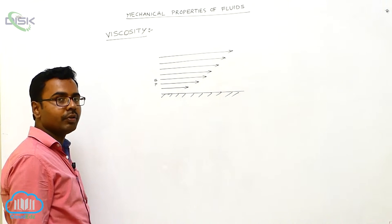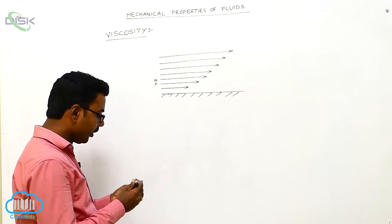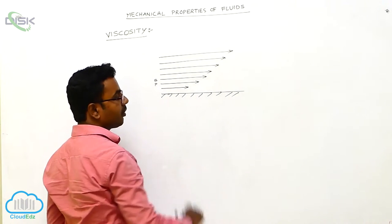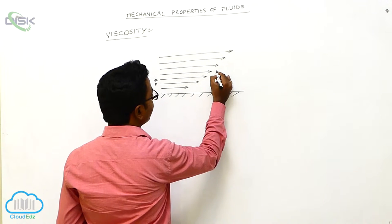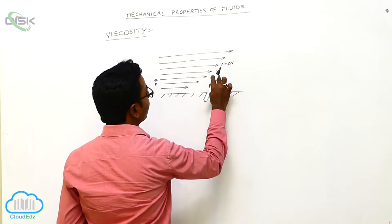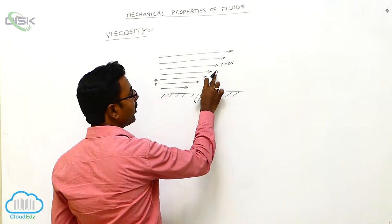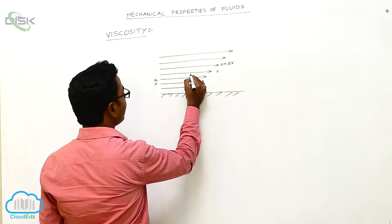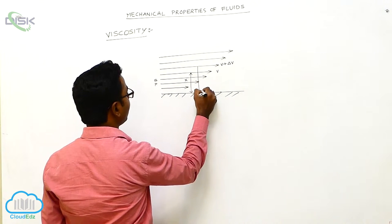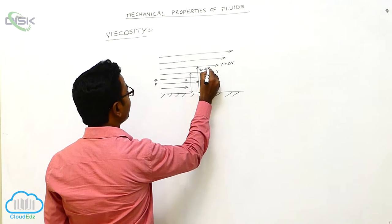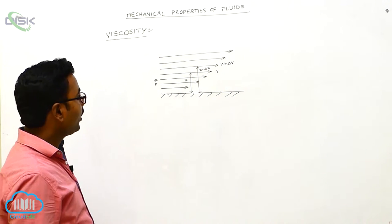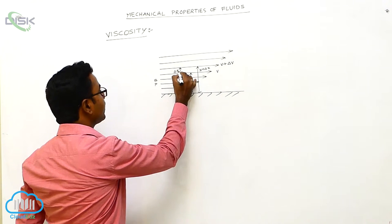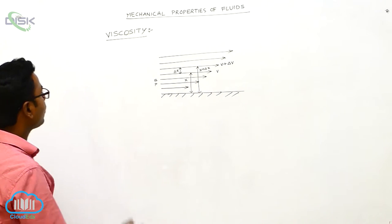This relative opposition causes viscosity between the two layers. Now we define the coefficient of viscosity. As we go up, the velocity of layers gradually increases. For two consecutive layers, suppose the velocities are V and V + ΔV — V for the lower layer and V + ΔV for the upper layer. The lower layer is at height X from the bottom and the upper layer at height X + ΔX, so the separation between the two layers is ΔX.